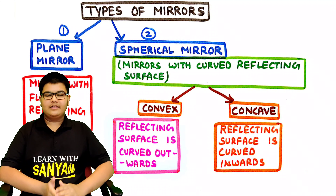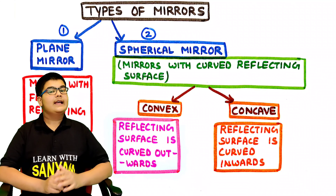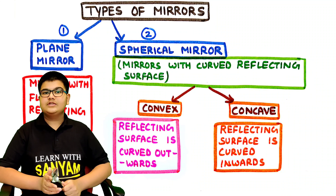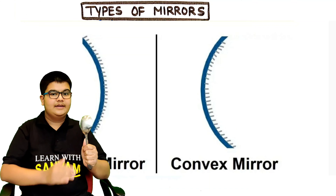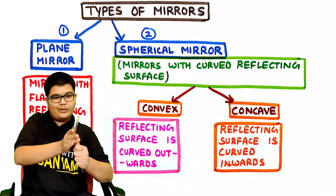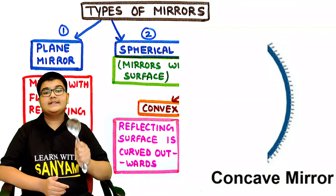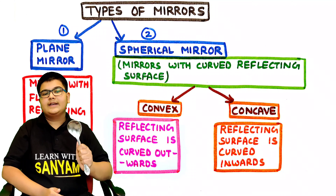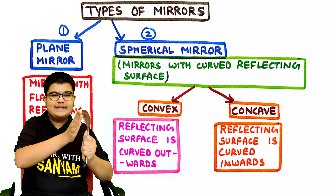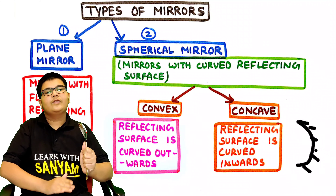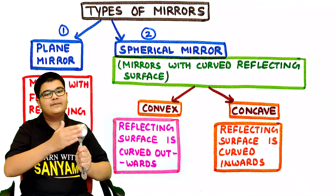After learning about plane mirrors, let's discuss spherical mirrors. These are mirrors with a curved reflecting surface, and they are of two types: convex mirrors and concave mirrors. Convex mirrors are those in which the reflecting surface is curved outwards — like the outer side of a spoon, which bulges outwards. In a concave mirror, the reflecting surface is curved inwards. The word concave contains 'cave', meaning depression, so the surface curves inwards. Convex means bulging outwards.